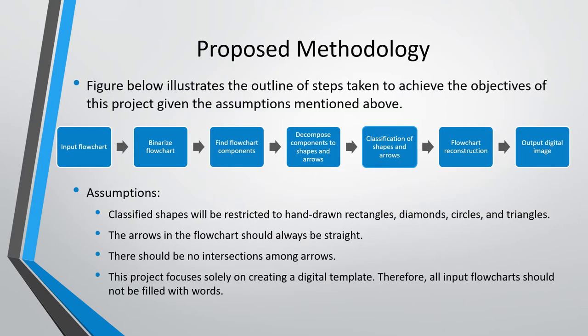My proposed methodology can be seen in this diagram. Firstly, the image will be binarized and then the shapes and arrows will be found and isolated. After that, the shapes are separated from the arrows for further analysis. After that, the shapes will be classified through training an SVM model and the arrows will be analyzed to match them to their respective shapes. And finally, the flowchart is reconstructed digitally.